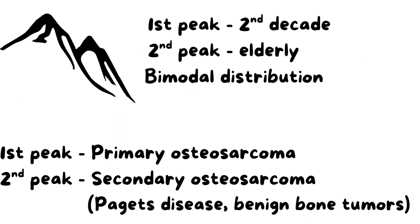In the first peak, occurring in children and adolescents, it is usually primary osteosarcoma, meaning it arises directly without any pre-existing conditions. In the second peak, occurring in the elderly, it is commonly secondary osteosarcoma, arising from pre-existing conditions like Paget's disease or pre-existing bone tumors like osteochondroma or osteoblastoma which undergo malignant transformation to osteosarcoma.